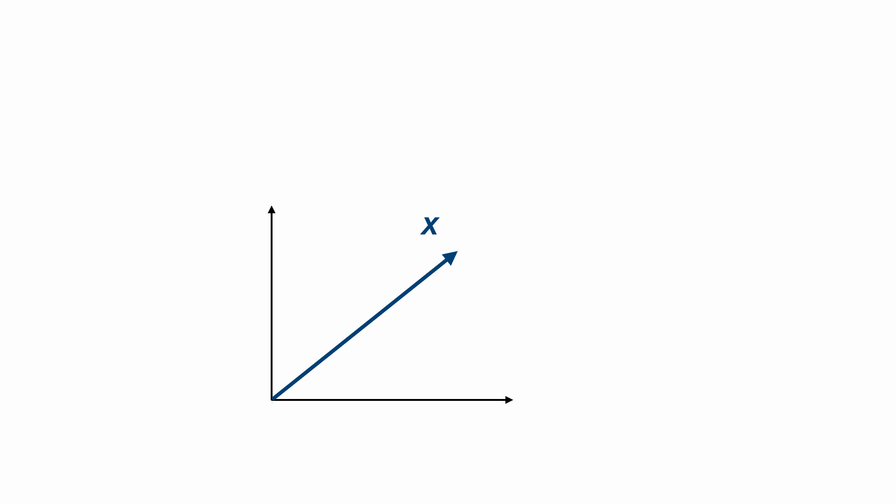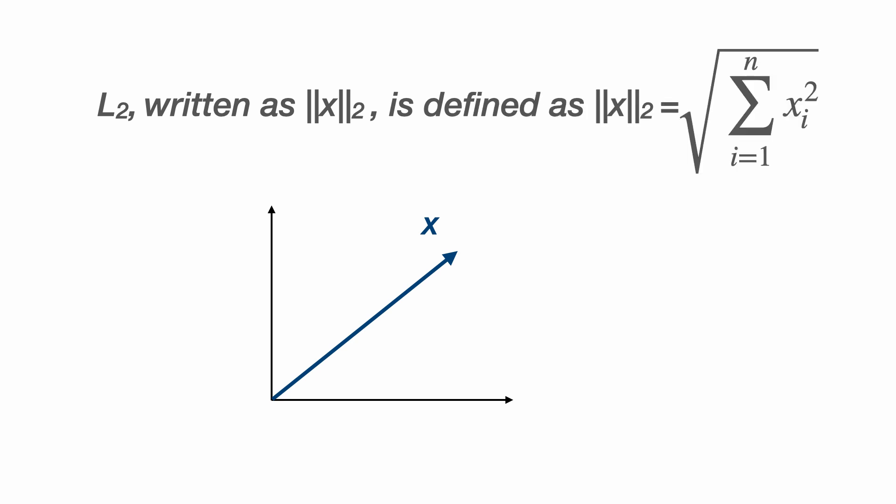The second norm I want to introduce is the L2 norm, written as two sets of vertical parallel lines with a subscript 2. This is defined as the square root of the sum of the squares of the components. And this probably looks familiar to you. It's often called the Euclidean distance, but we can think about it as the length of a straight line between the two points 0, 0 and the coordinate X1, X2. So we take X1 squared plus X2 squared and we take the square root.